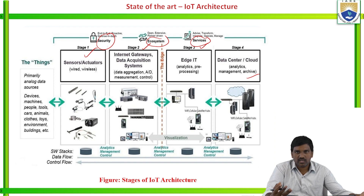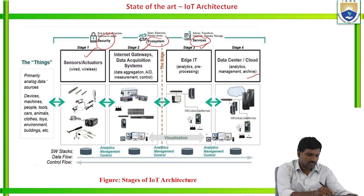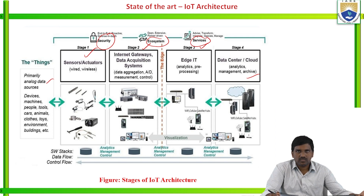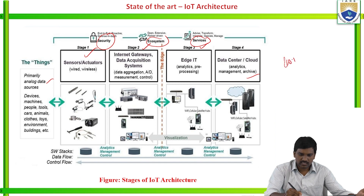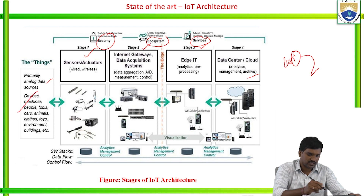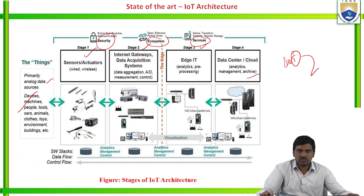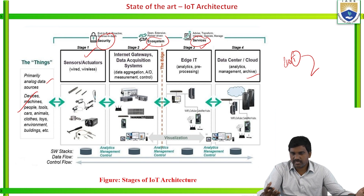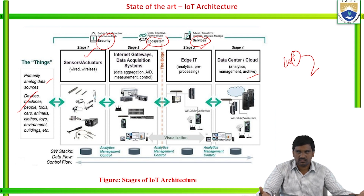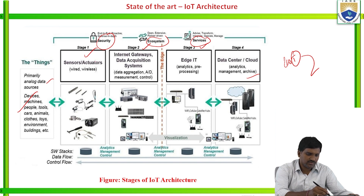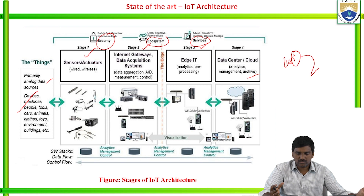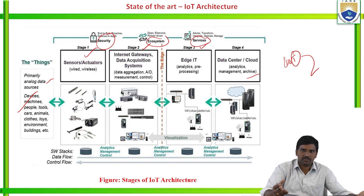IoT devices are primarily analog data sources. These include devices, machines, people, tools, cars, animals, clothes, toys, environment, buildings, etc. Whatever the internet of things — whatever the thing may be — we have different devices that you can connect with the internet to make them smart devices. In stage one, sensors and actuators can be connected via wired or wireless communication to gather information based on the performance of activities.